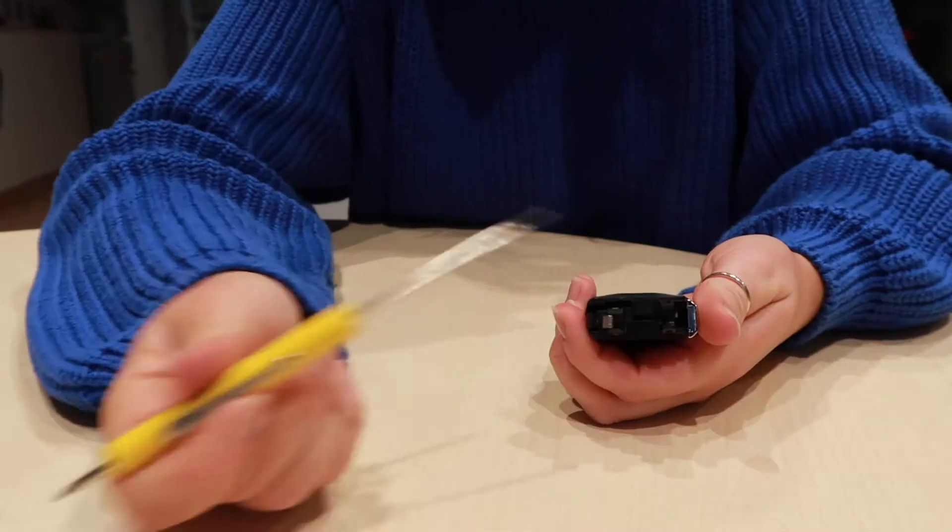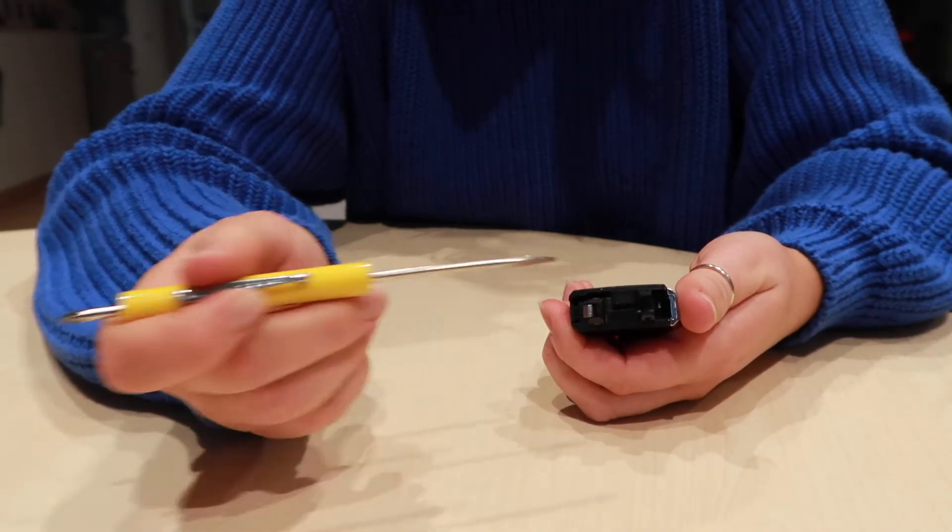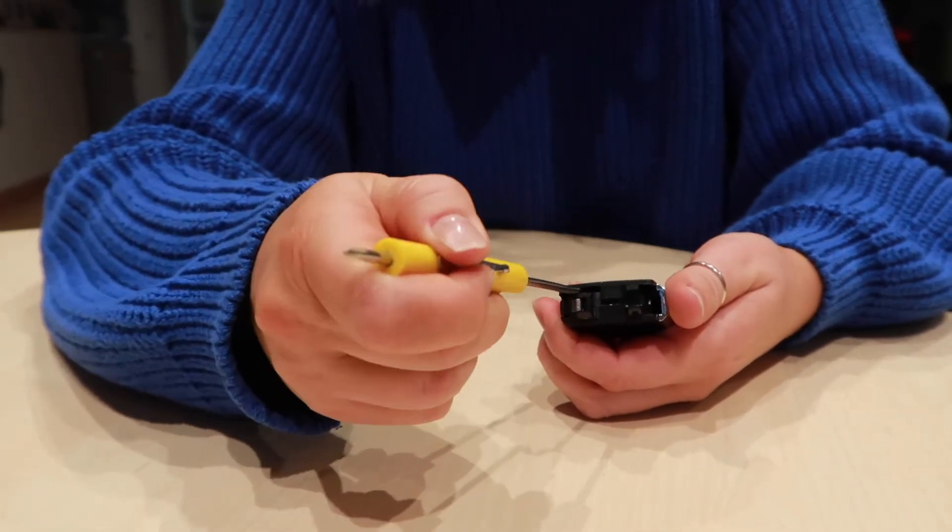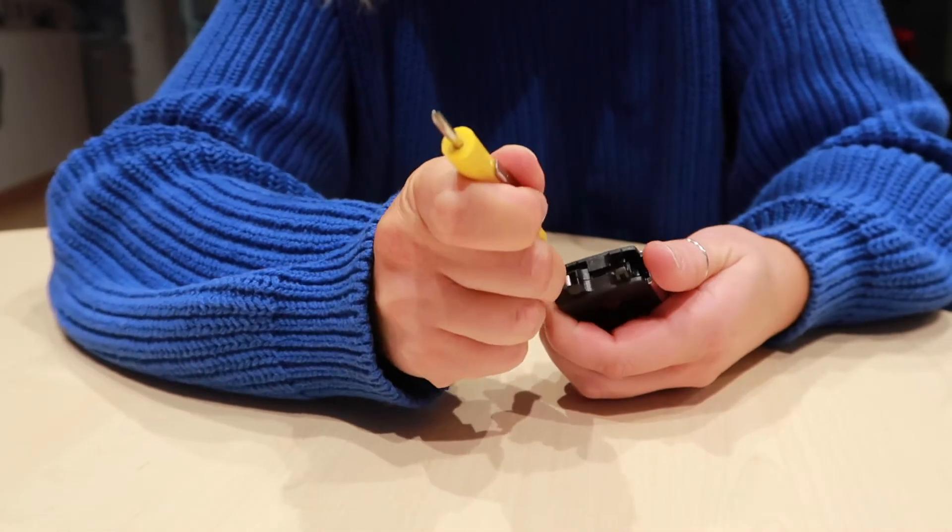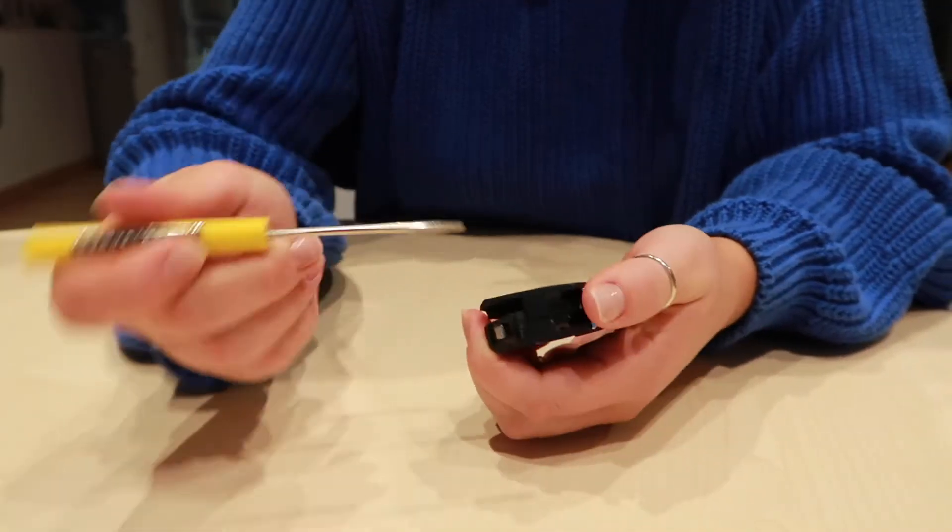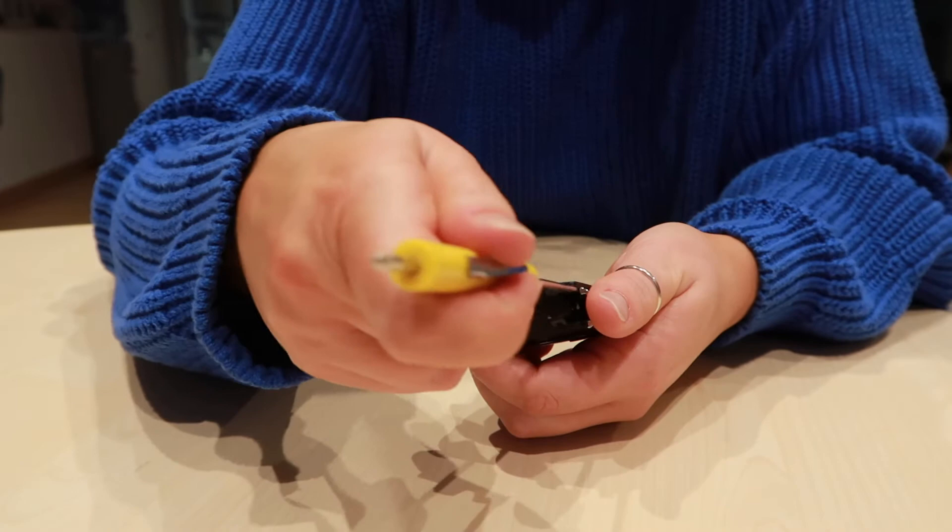We need to open this side. So you're going to take the flathead screwdriver on the opposite side that hasn't popped out yet and just slide it down pretty carefully. Once you hear the pop on this side you're going to go back over to the beginning side.